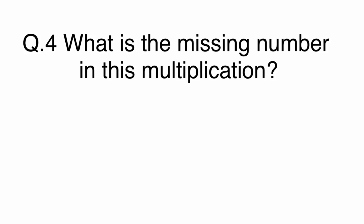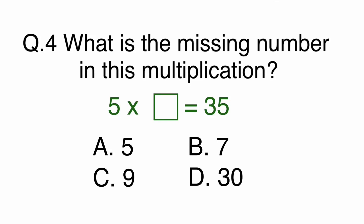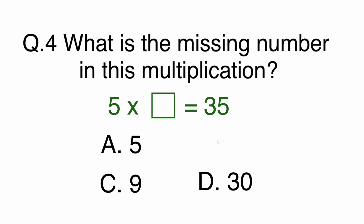Question 4. What is the missing number in this multiplication? 5 times 7 equals 35. A. 5. B. 7. C. 9. Or D. 30. 5 times 7 equals 35, or 35 divided by 5 to get 7. The answer is B, 7.